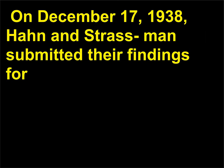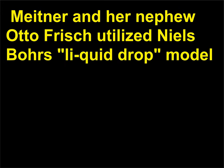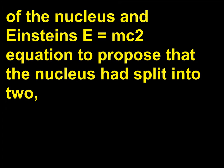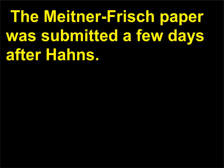She soon moved to Sweden and kept up her collaboration with Hahn by mail. On December 17, 1938, Hahn and Strassmann submitted their findings for publication but admitted that they had no explanation for the appearance of barium. Meitner and her nephew Otto Frisch utilized Niels Bohr's liquid drop model of the nucleus and Einstein's E = mc² equation to propose that the nucleus had split into two, releasing both extra neutrons and a large amount of energy.